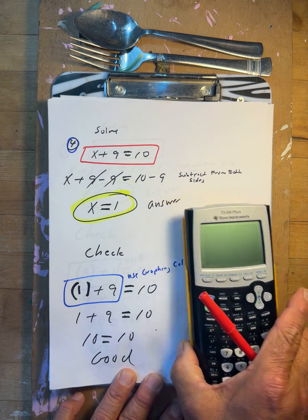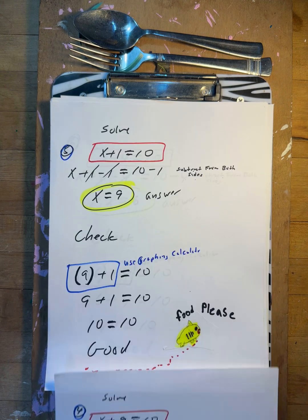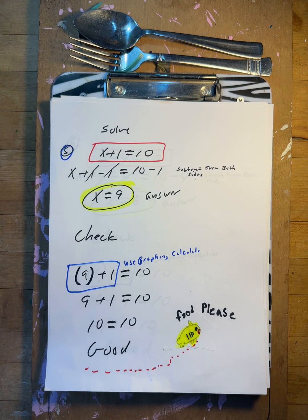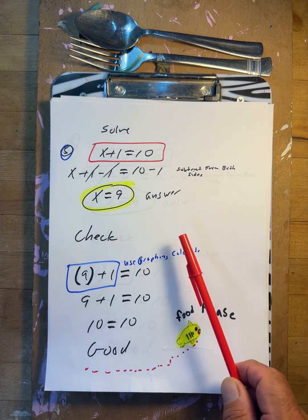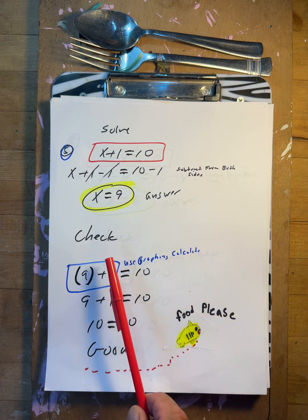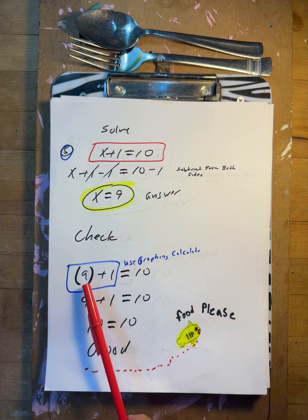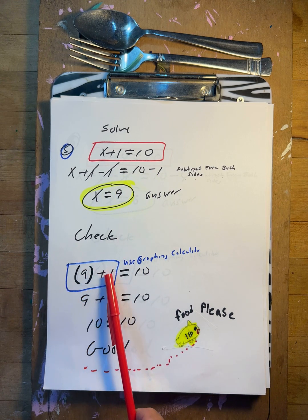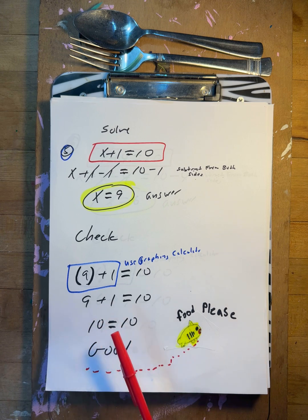x plus one equals ten. Minus one, minus one. So x equals nine. Does that work? Put it back in: nine plus one is ten. Ten equals ten — yes, that works.